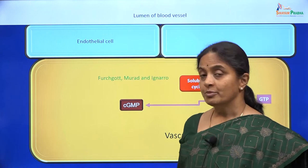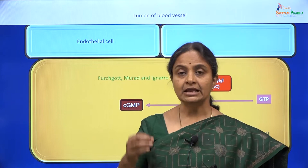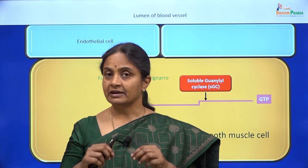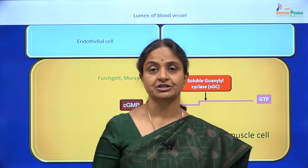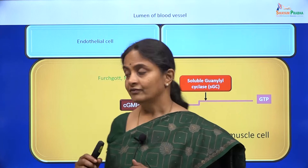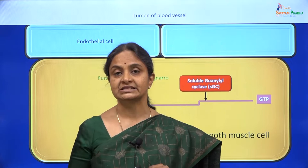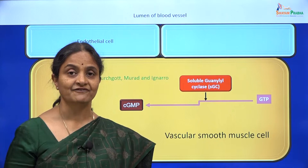Robert Furchgott realized that when acetylcholine is added onto vascular smooth muscle, if the endothelium is intact that piece of muscle tissue will relax, but if the endothelium is damaged, addition of acetylcholine will induce a contraction in that vascular smooth muscle. Therefore Furchgott said there must be a substance released by the endothelium which relaxes the vascular smooth muscle cell. He called that substance endothelium-derived relaxing factor, or EDRF.